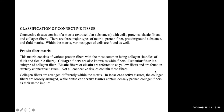Connective tissues consist of a matrix — anything extracellular. Epithelial tissue was mainly made of cells, but connective tissue has cells plus this matrix, which can be proteins, fibers, collagen fibers, or ground substance. The three major types of matrix are protein fibers, protein ground substance, or fluid. Within the matrix there can be various cells. A protein fiber matrix can contain collagen fibers, reticular fibers, or elastic fibers — different types of connective tissue contain different fibers depending on their purpose.